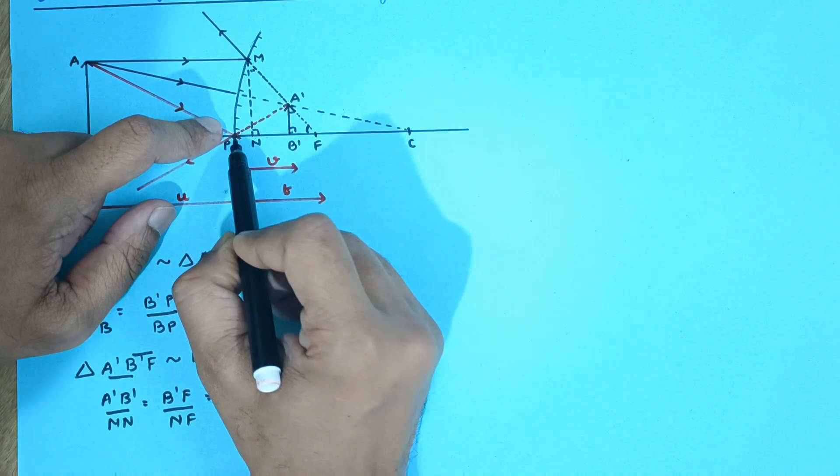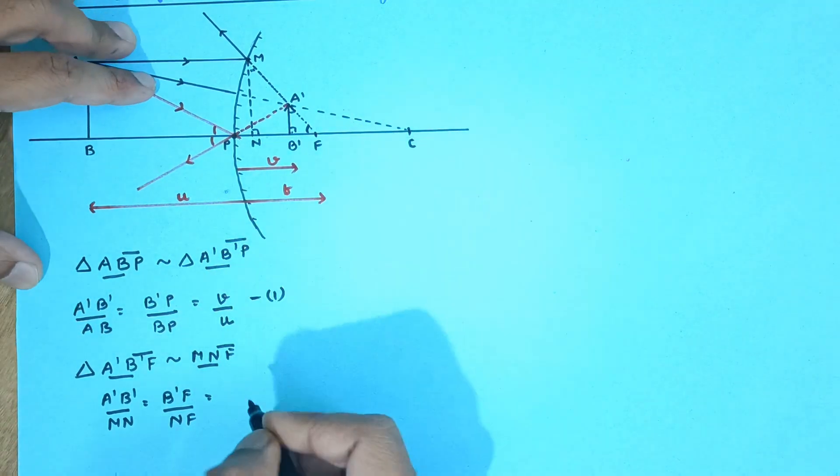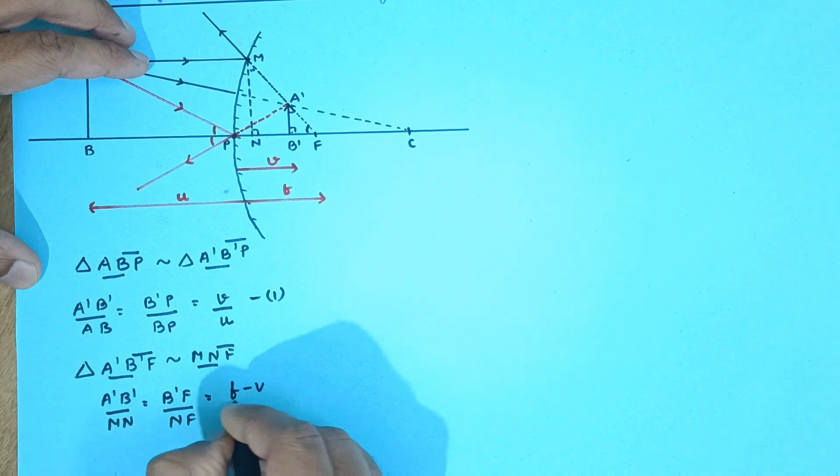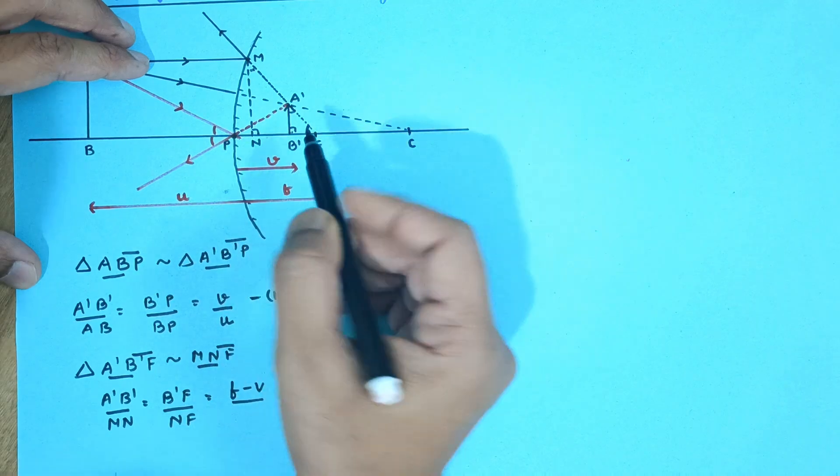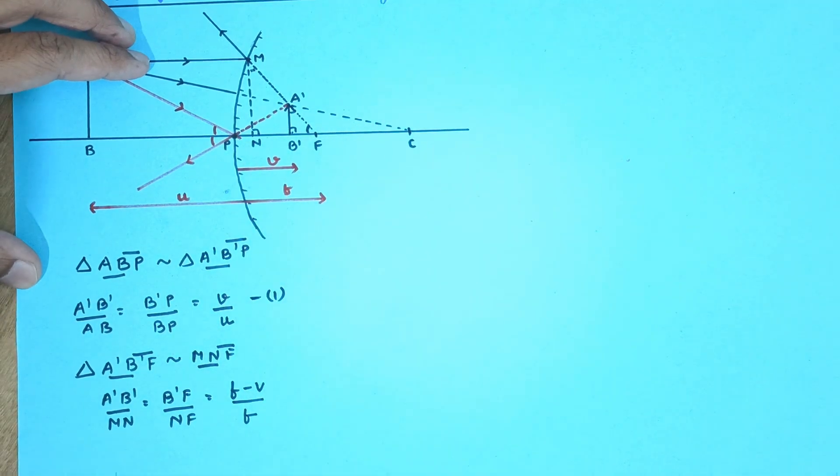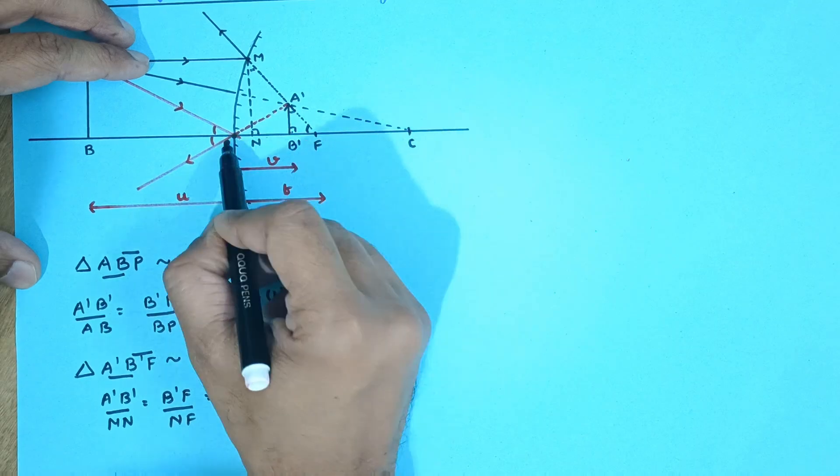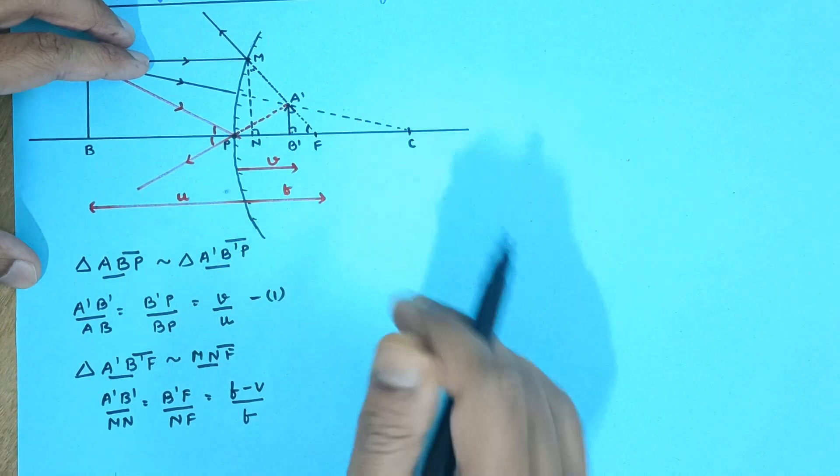So B'F is PF minus PB'. So this is focal length minus the image distance. So this is F minus V upon NF is same as PF, which is the focal length. NF and PF are one and the same.